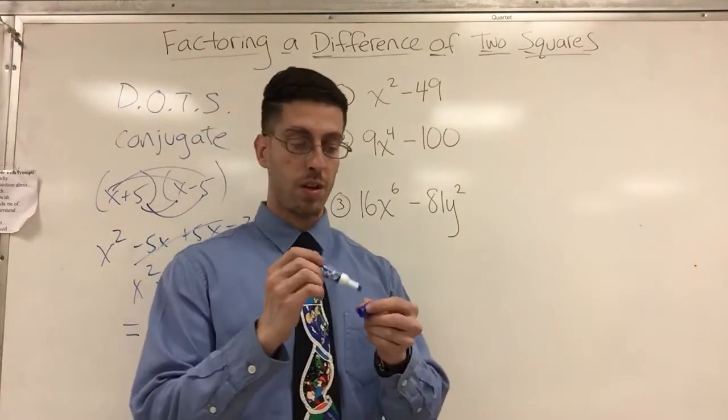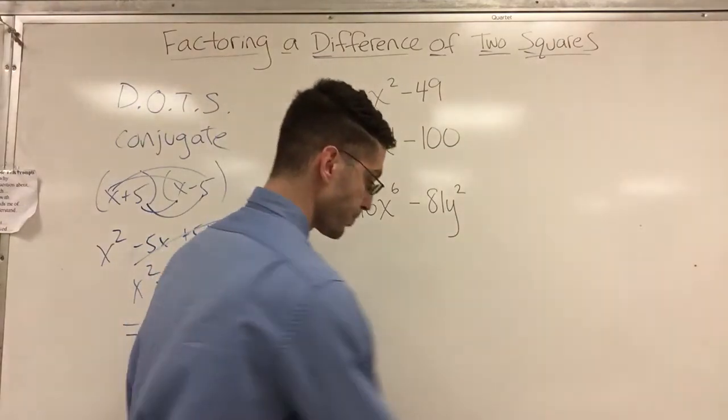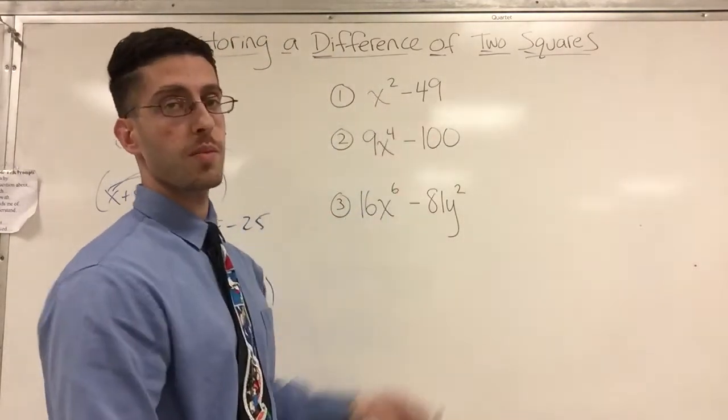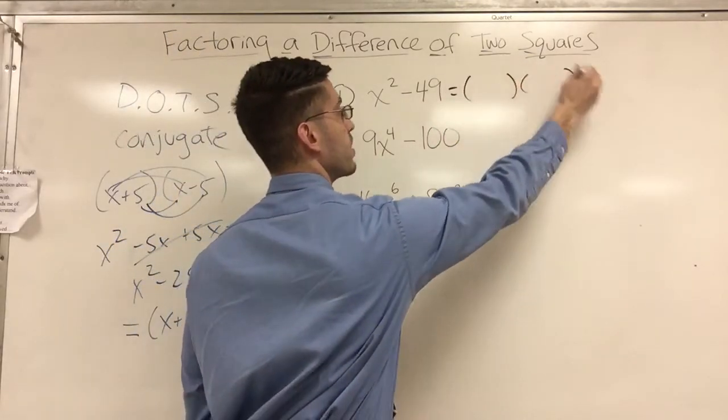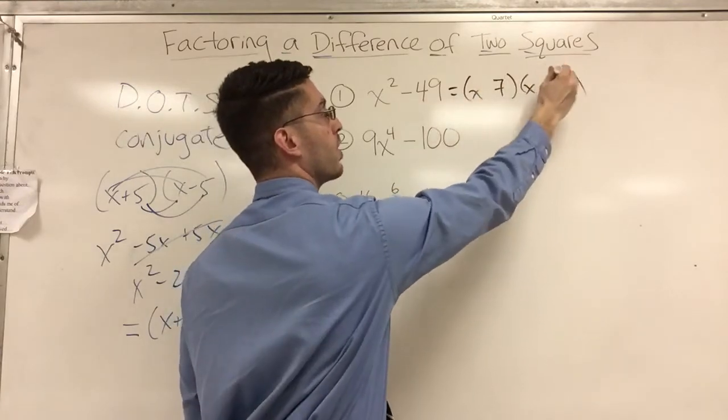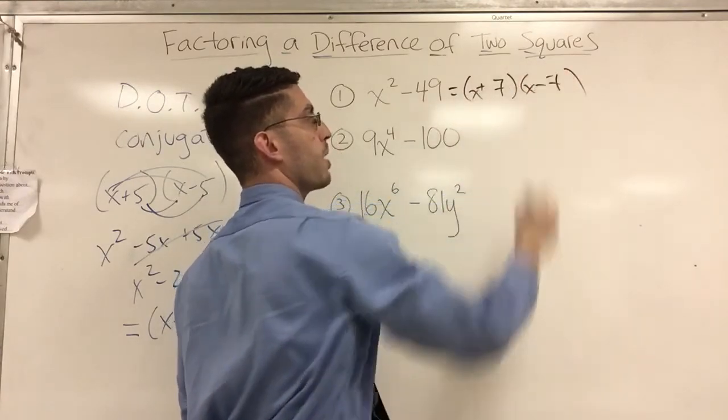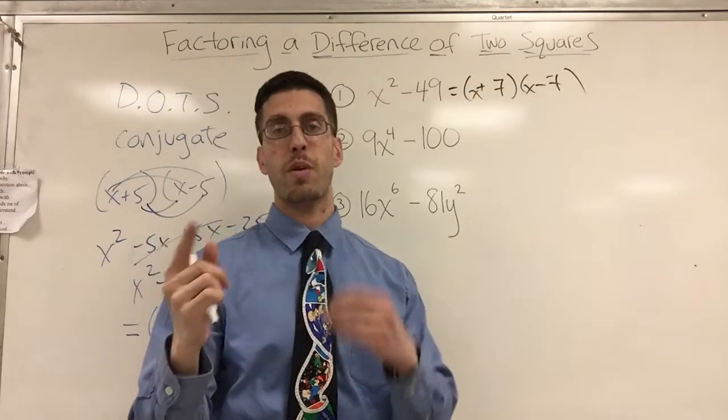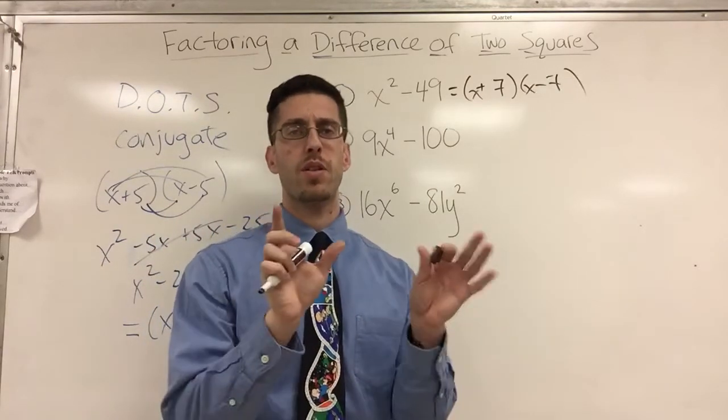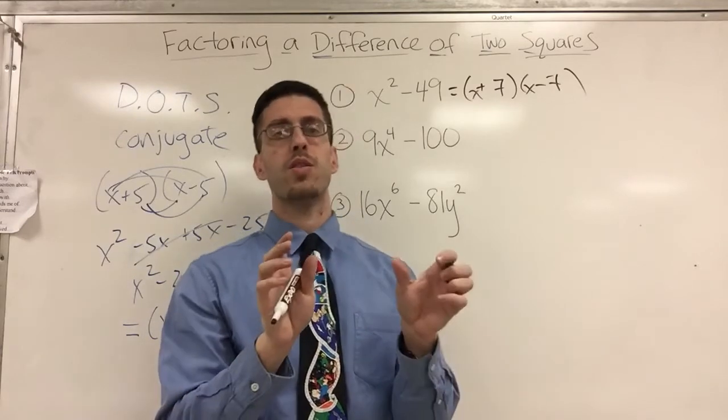So try to do these three on your own. Stick around if you want the answers. Let's see, I got a difference of two squares. My square root of x squared is x, square root of forty-nine is seven. One is plus, one is minus. Doesn't matter if you put the first one minus and the next one plus, or the first one plus and the next one minus. They're switchable - you'll still get the same answer. That's called the commutative property.